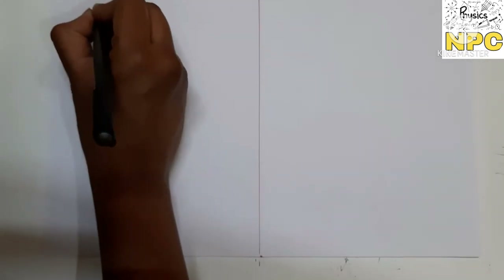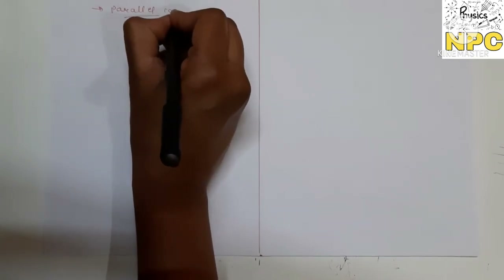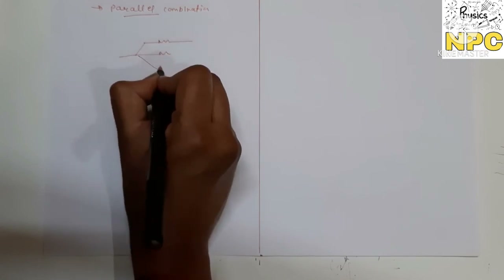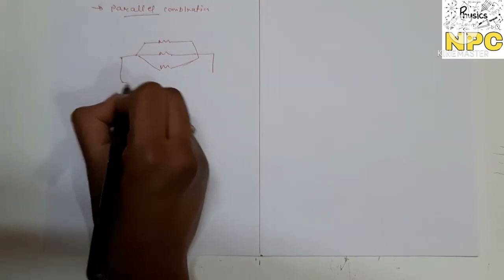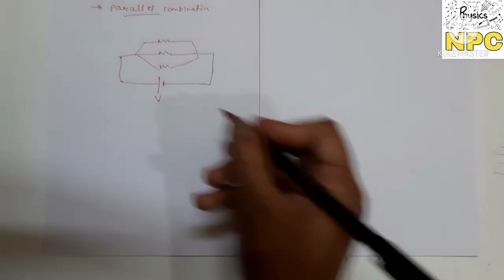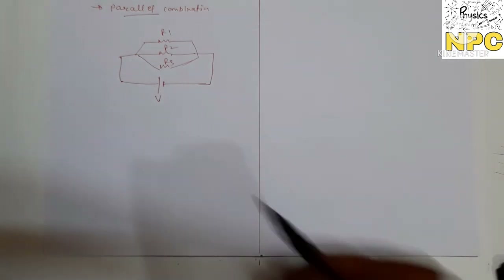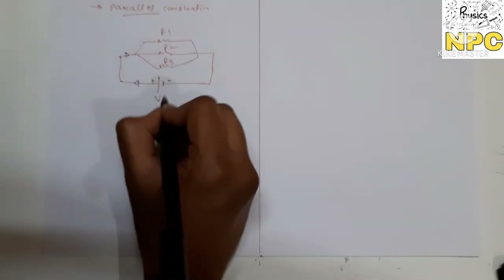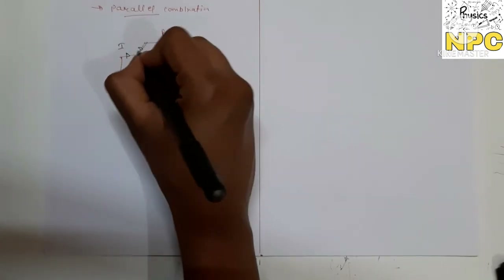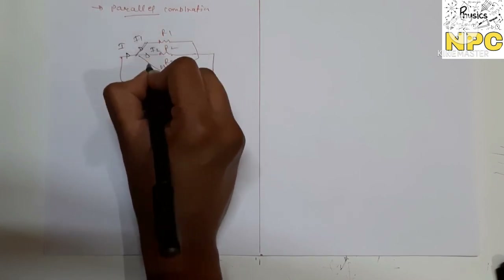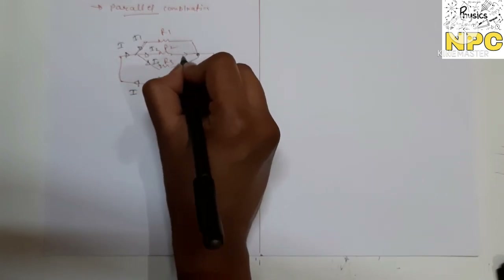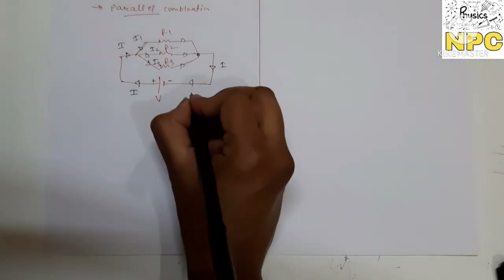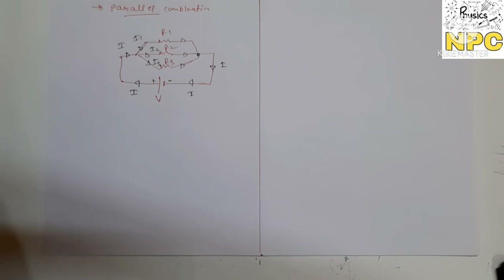Now parallel combination. In parallel combination, resistors R1, R2, and R3 are arranged side by side, all connected between the same two points, with one battery. Current enters from the positive terminal as I and divides into I1, I2, and I3 through each resistor. Then all three currents combine again at the junction and return to the negative terminal. So the circuit is complete.